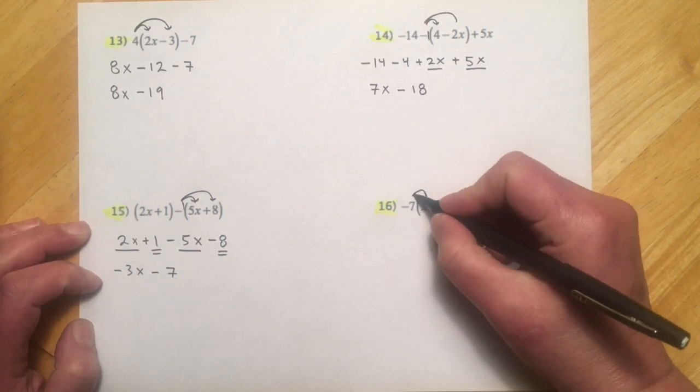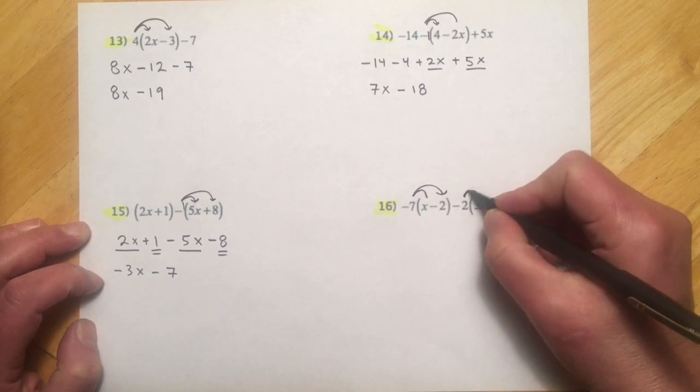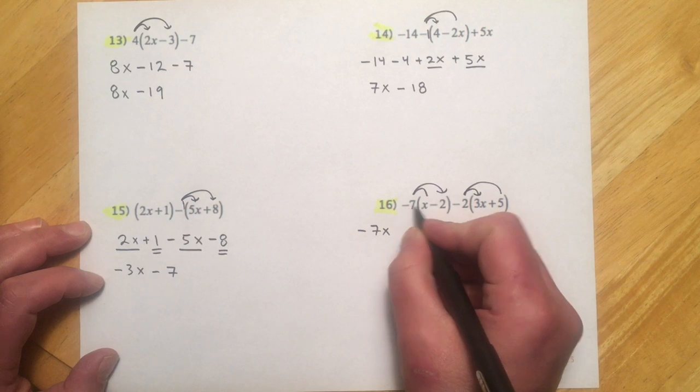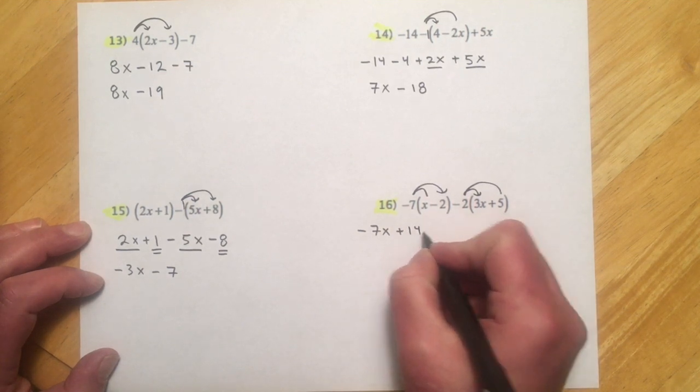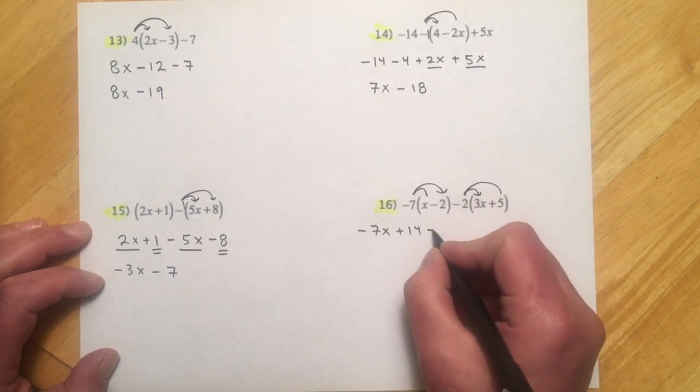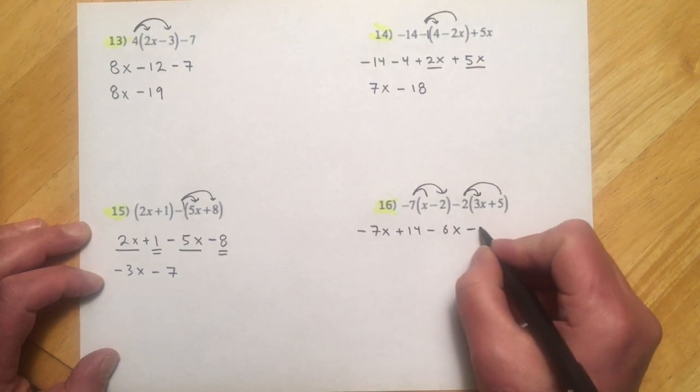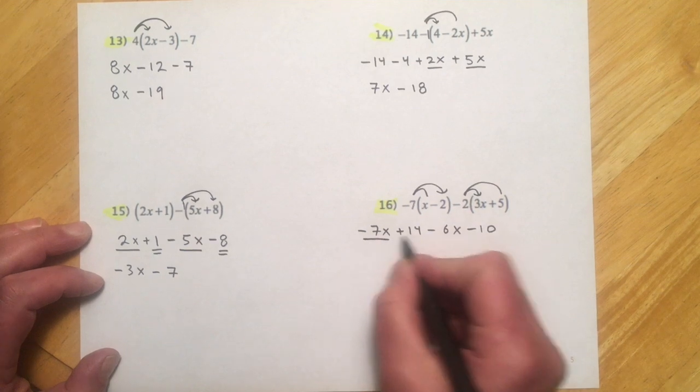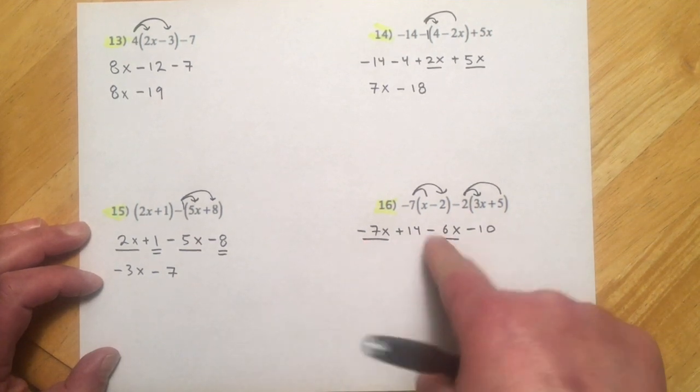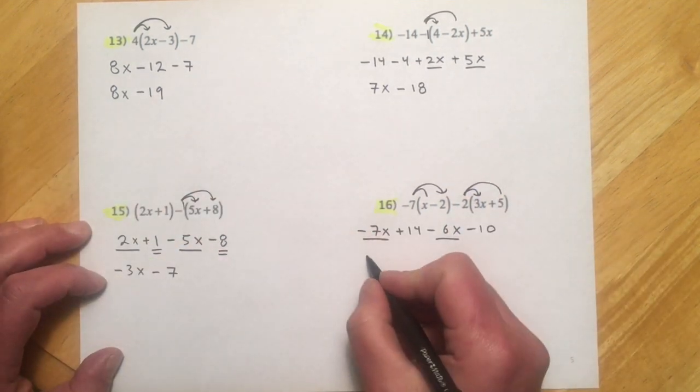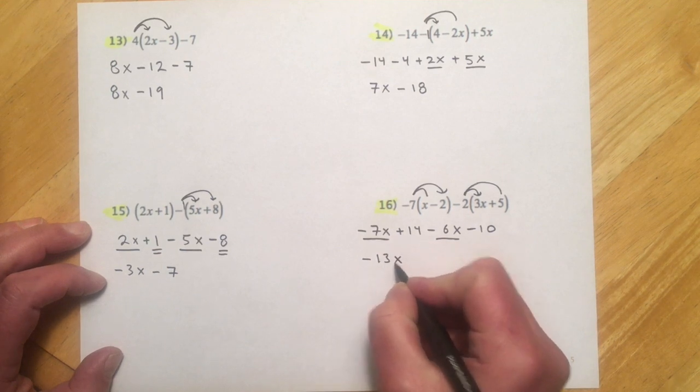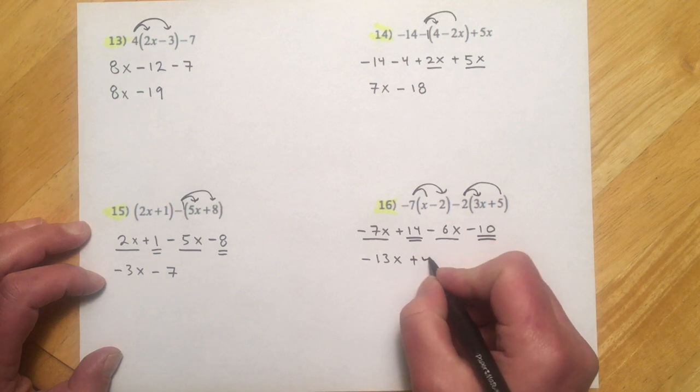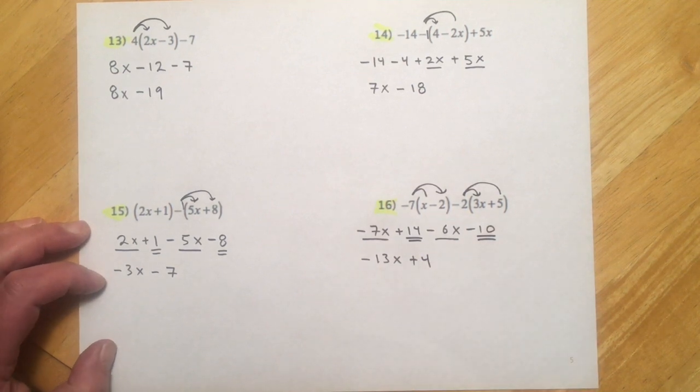And then here, we'll clear. So negative 7x. That'll be plus 14. Minus 6x. Minus 10. And then gather up our x's. So down 7, down 6. So farther in the hole. So that is negative 13x. We're going up 14 and then back down 10. So that should leave us at plus 4.